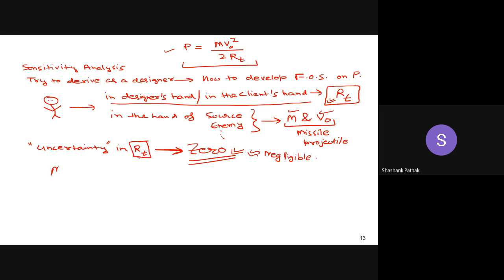Based on that information, please listen carefully. We will now create one scenario. Let's say there is 10% error or uncertainty in the estimation of impact velocity v0. And let's say there is 5% uncertainty or error in the estimation of mass M. Remember, Rt is fully known, so the fill-in-the-blank answer for the second uncertain parameter is mass M.